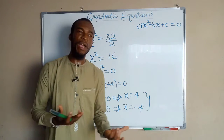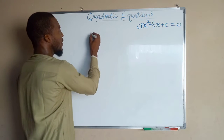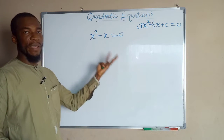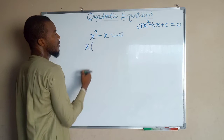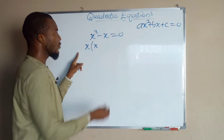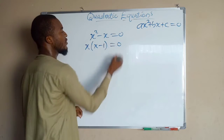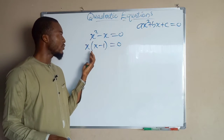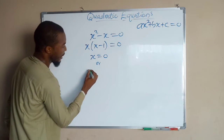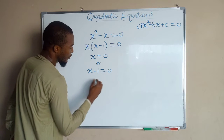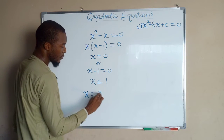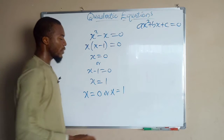Now let us look at quadratic binomials where we have two terms. Suppose we have x squared minus x equals 0. Both terms have x in common, so we factor x out, giving x multiplied by x minus 1 equals 0. Setting each factor equal to 0: x equals 0, or x minus 1 equals 0 which implies x equals positive 1. Hence, x is either 0 or positive 1 for this equation to be true.